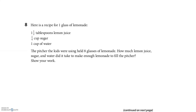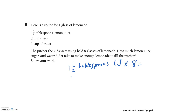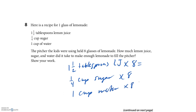Here's a recipe for one glass of lemonade: 1 and 1/2 tablespoons of lemon juice, 1/4 cup sugar, 1 cup of water. The pitcher the kids were using held 8 glasses of lemonade. How much lemon juice, sugar, and water did they need to fill the pitcher? Everything is times 8. So: 1½ tablespoons of lemon juice times 8, 1/4 cup sugar times 8, and 1 cup of water times 8 — that one's easy: 8 cups of water.